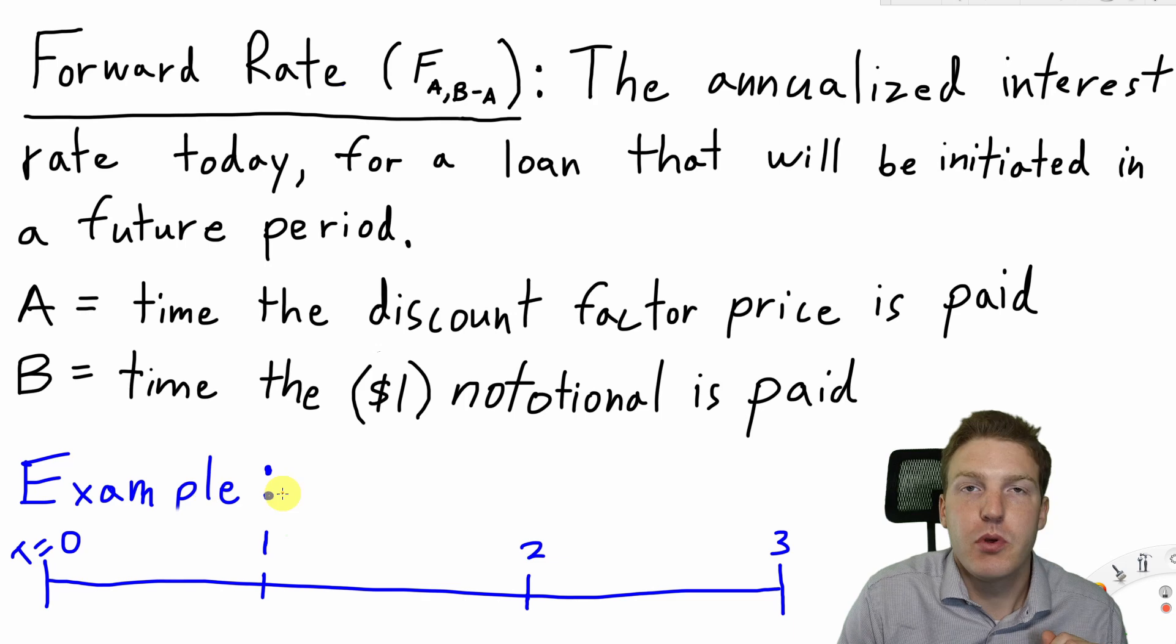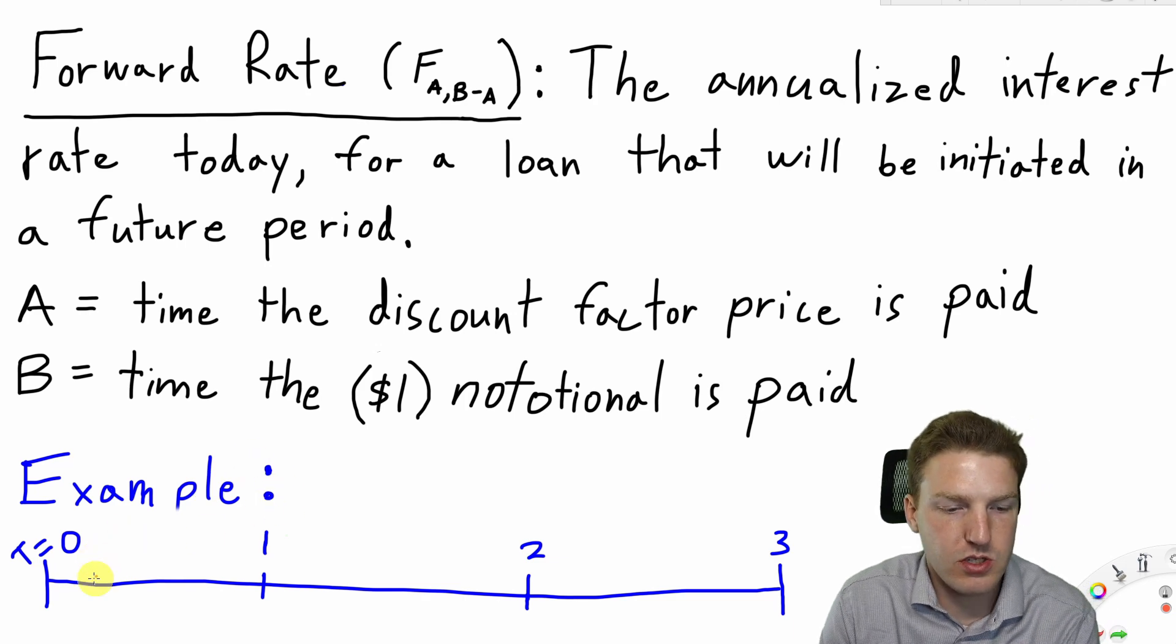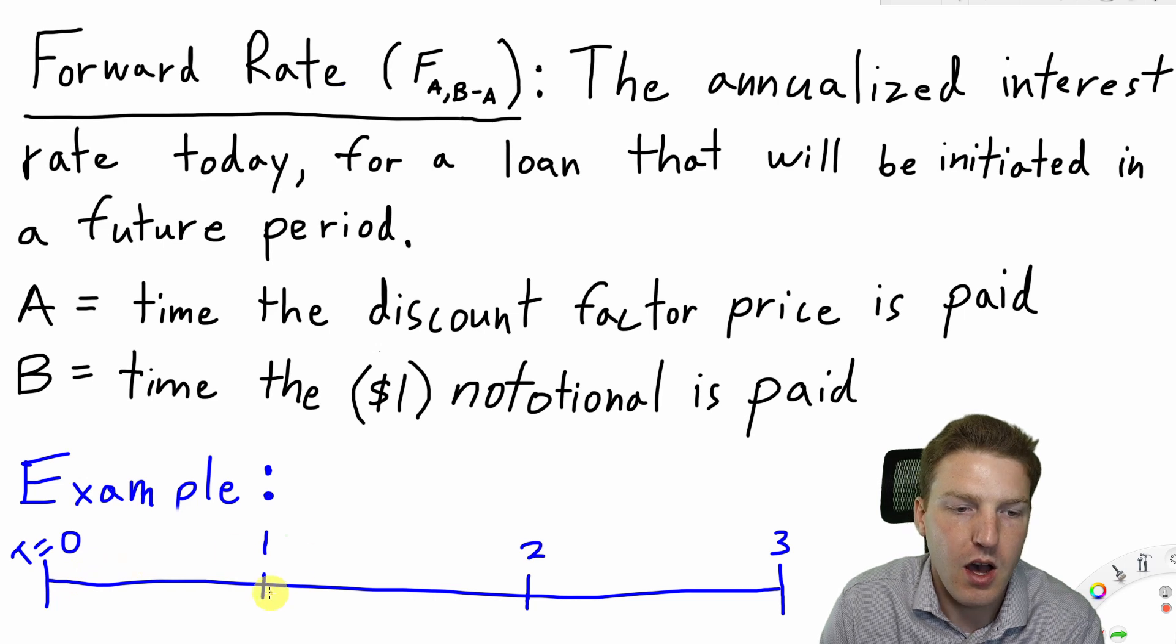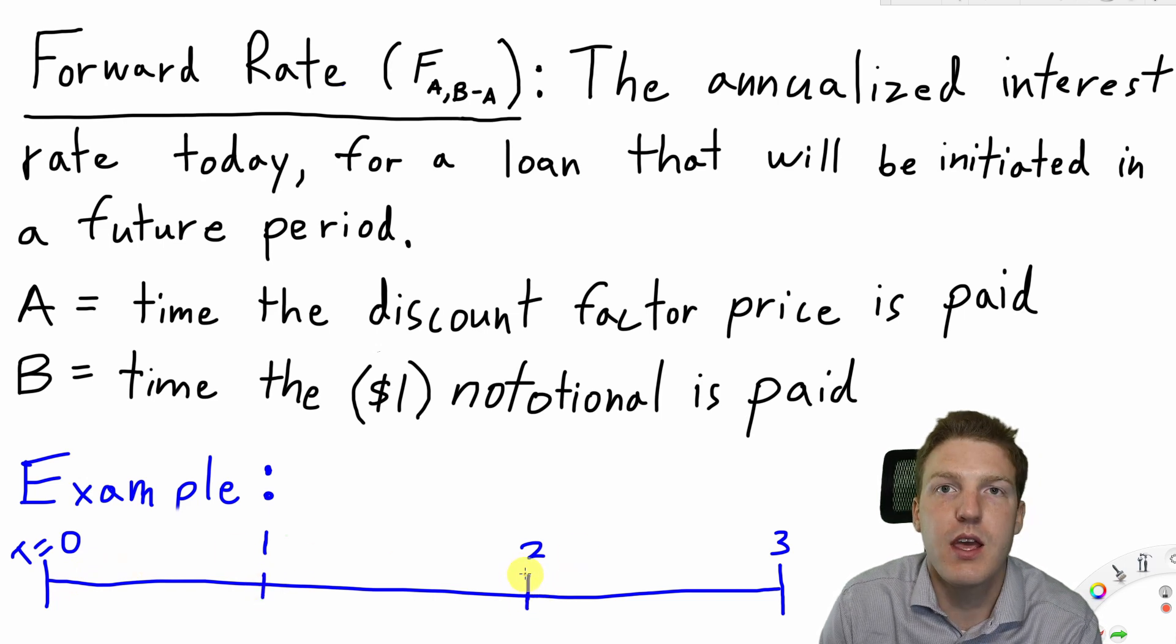So we can illustrate this with an example here on the bottom of our screen. This is just a timeline where T equals 0 represents today, 1 is a year from today, 2 is 2 years from today, etc.